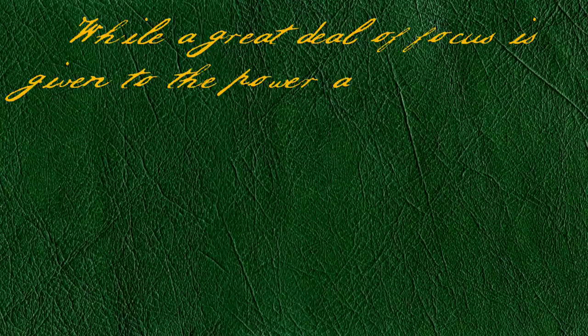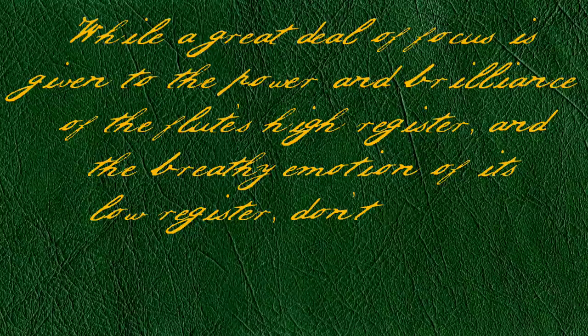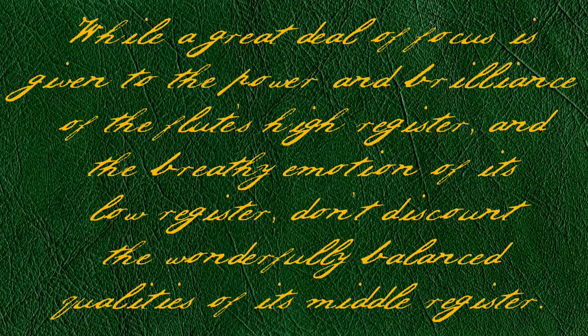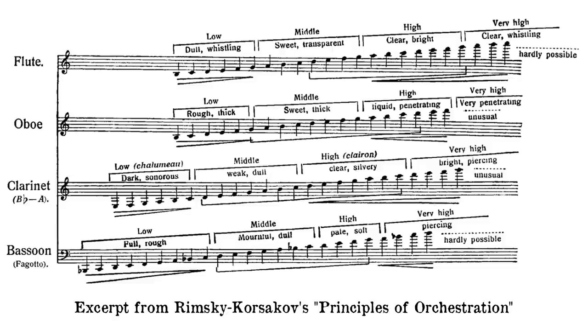While a great deal of focus is given to the power and brilliance of the flute's high register and the breathy emotion of its low register, don't discount the wonderfully balanced qualities of its middle register. There's a tendency in orchestral scoring to employ wind instruments in their most potent registers for solos and featured lines. Certain weaker registers are often highlighted precisely because they work against this timbral hegemony — the low register of the flute, for instance, or the tenor register of the bassoon.